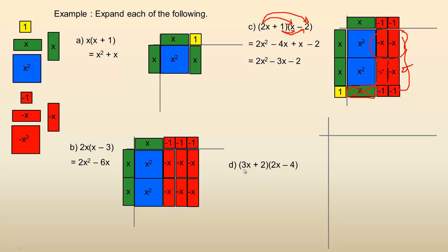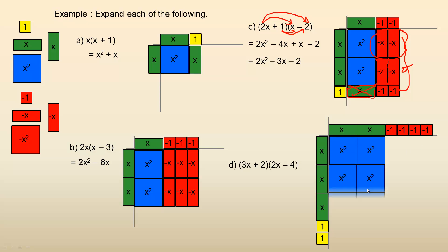So last one down here for D, three X plus two. So we'll put three X plus two here. And then two X minus four across the top. And we'll start filling this up. See, all these would be X squared. So that comes from multiplying the three X by the two X. That's six X squared. So there's six of these X squareds.